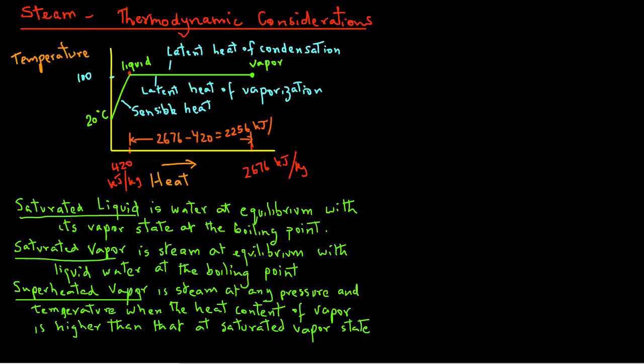Referring back to the diagram we looked at before, as the change of phase takes place from liquid to vapor, the composition of that mixture is between liquid and vapor states. It is mostly liquid towards the left, but as more and more heat is added, the phase change takes place, so we have more and more vapor towards the end.